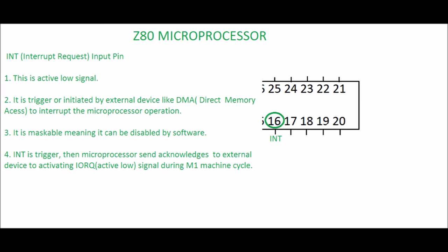Pin 16: INT, Interrupt Request. It is an input pin. This is an active low signal, meaning when it is low it is not in working state and when it is high it is in working state. It is triggered or initiated by an external device like DMA (direct memory access) to interrupt the microprocessor operation. It is maskable, meaning it can be disabled by software. When INT is triggered, the microprocessor sends an acknowledge to the external device by activating the active low signal during the M1 machine cycle.